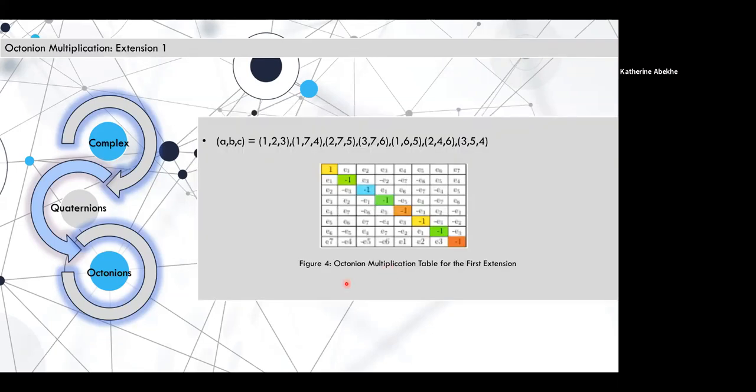Here we take a look at octonion multiplication. This is the first extension. It is the least intuitive of all the extensions, but it does have some nice properties. It's the most direct extension. So that Q₁ is actually e₁, Q₂ is e₂, Q₃ is e₃. And so this first four rows and first four columns actually gives you the table of quaternion multiplication.